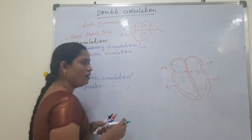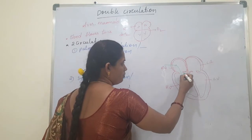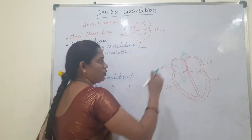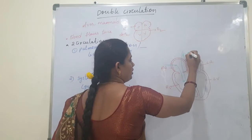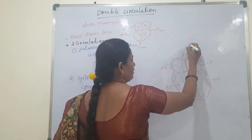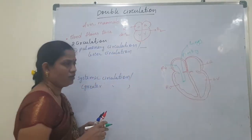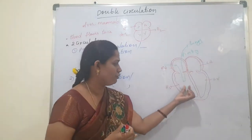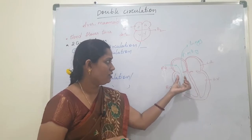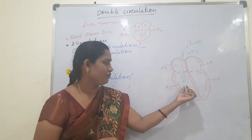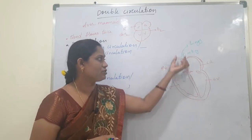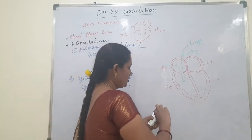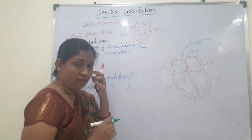That blood flows into the right ventricle, and from the right ventricle it flows to the lungs through the pulmonary artery. In the lungs, the blood purification process takes place.